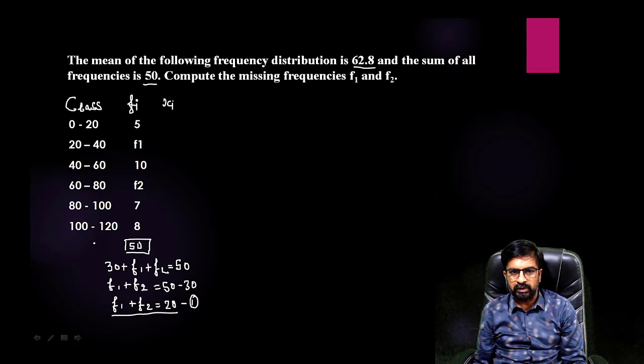Let me tell you, first you need to find out class mark or midpoint. How you can do that? Sum of these two divided by 2. 0 plus 20, 20 divided by 2 is 10, then easily you can get this 30, 50, 70, 90, 110.